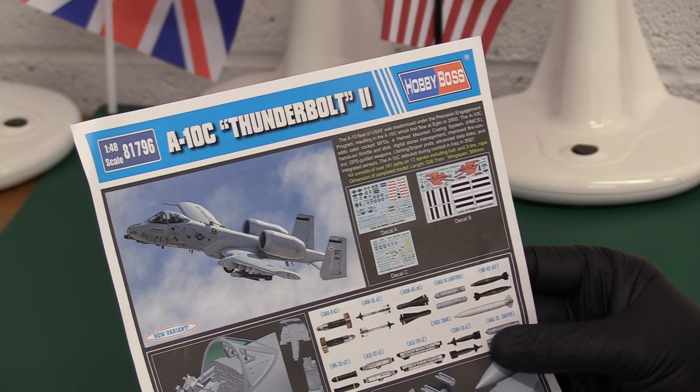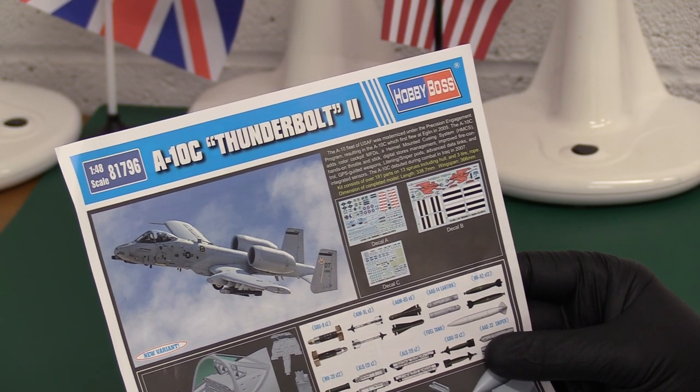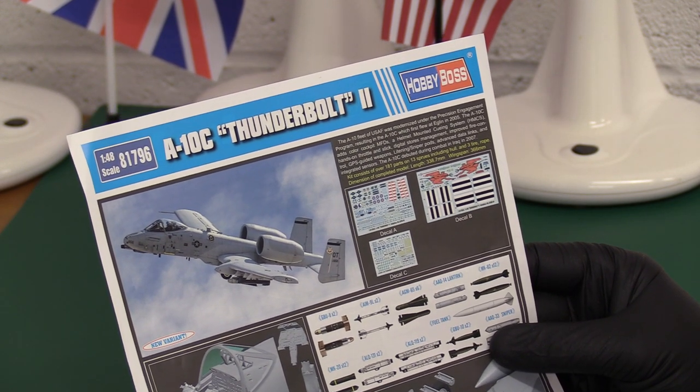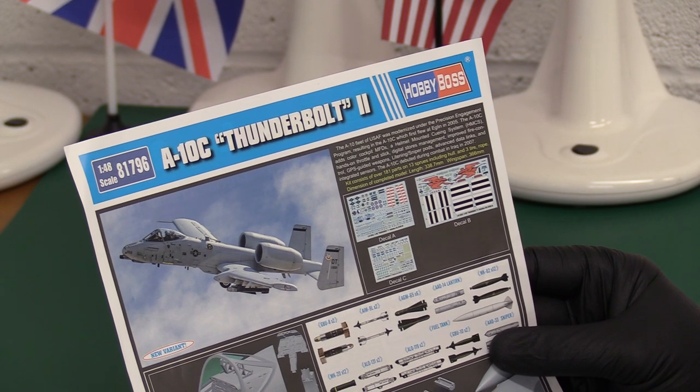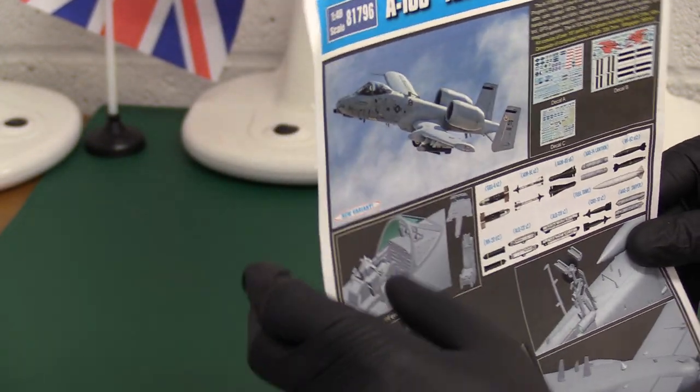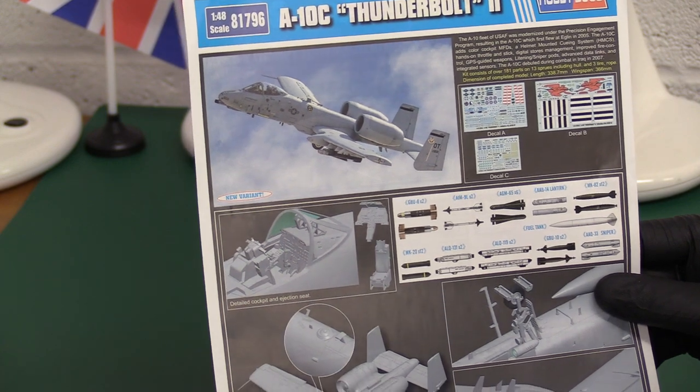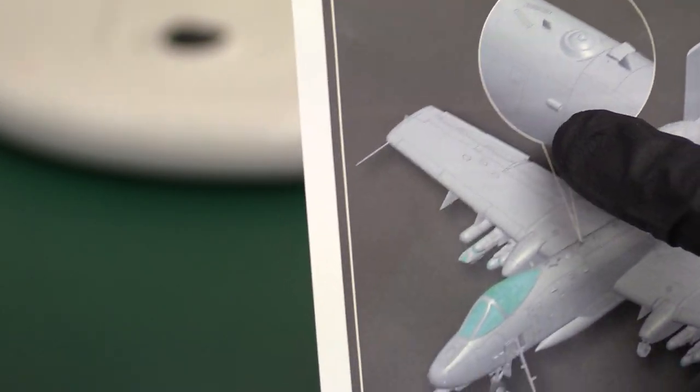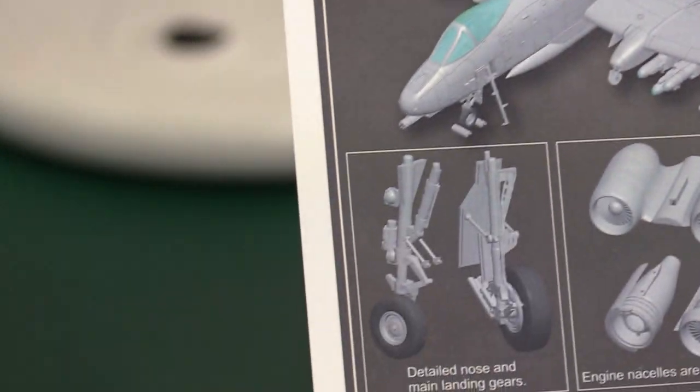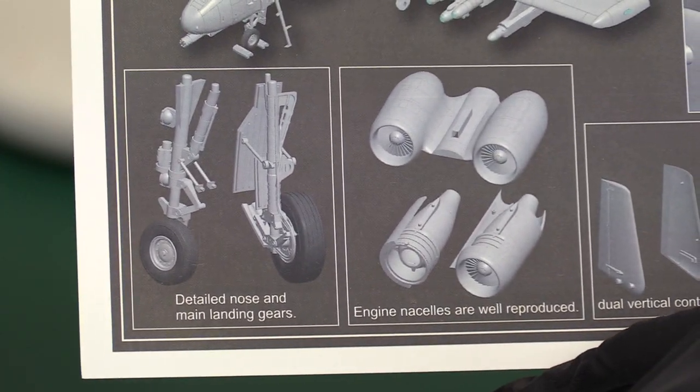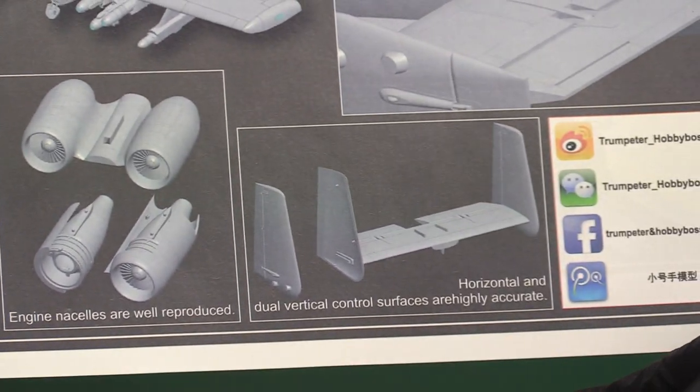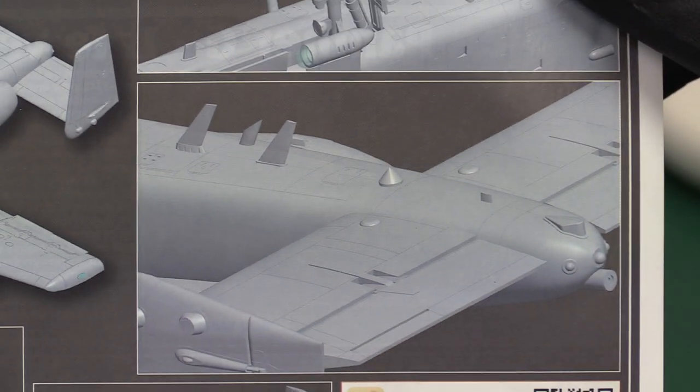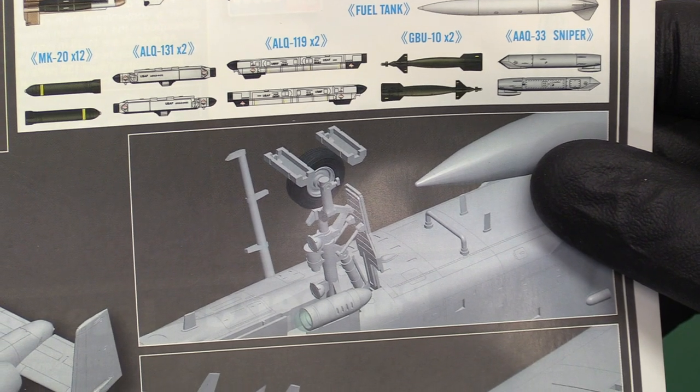On the side you can see the weapon set. We have GBU-8s, Sidewinder AIM-9L which is the same as the ones used by the British in the Gulf War very successfully, AGM-65s that's the Maverick, the Lantern pod, Mark 82 bombs over here, Mark 20 bombs, ALQ-131 and ALQ-119 which are various countermeasure pods, GBU-10 laser guided bombs, and finally Sniper pod which is the laser gun system. This is why the Pave Penny has been dropped, it looks a bit sleeker at the front end.